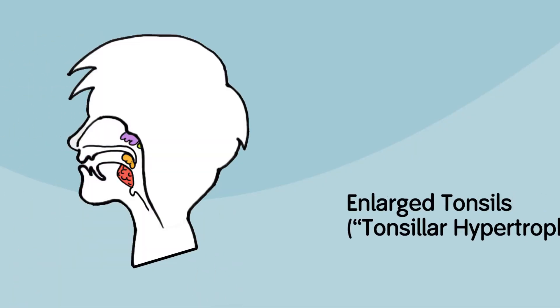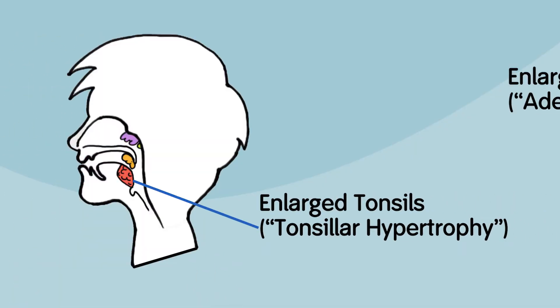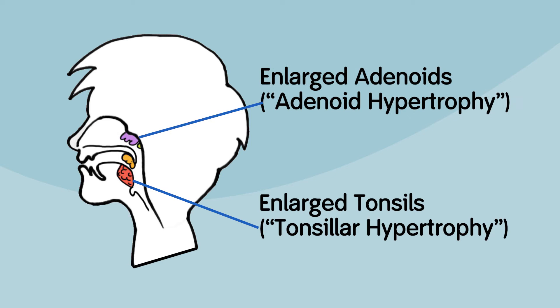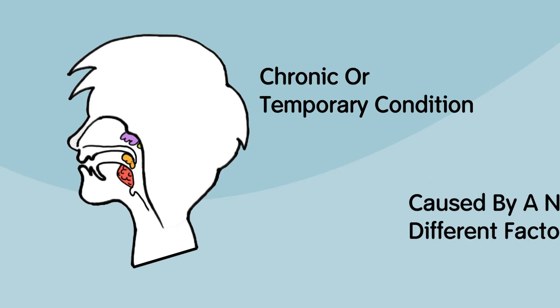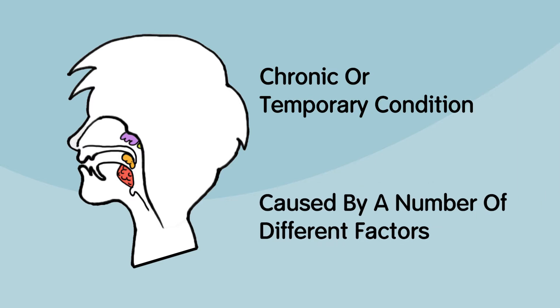Enlarged tonsils, also called tonsillar hypertrophy, and enlarged adenoids, known as adenoid hypertrophy, can be a chronic or temporary condition caused by a number of different factors including infection.